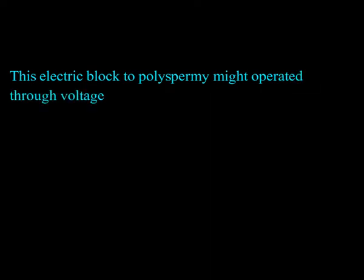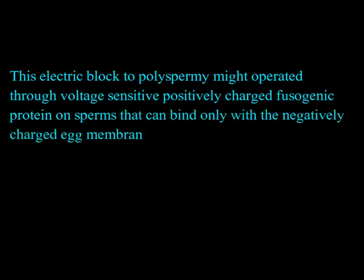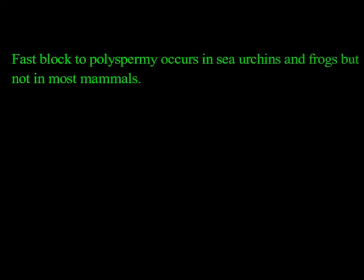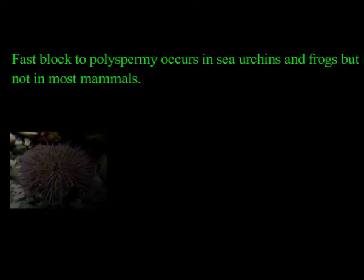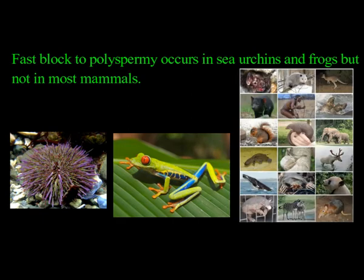This electric block to polyspermia might operate through a voltage-sensitive, positively charged fusogenic protein on sperms that can bind only with the negatively charged egg membranes. Fast block to polyspermia occurs in sea urchins and frogs, but not in most mammals.